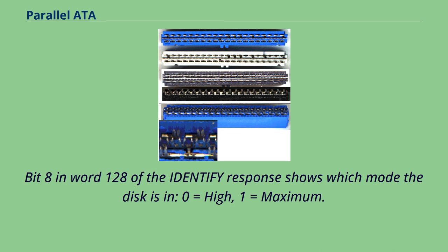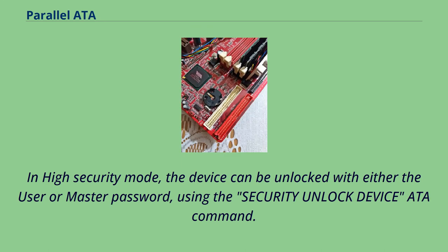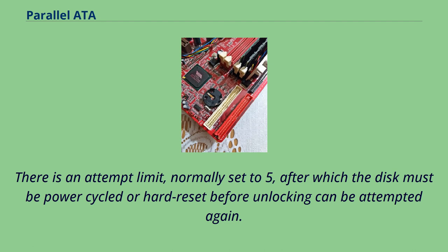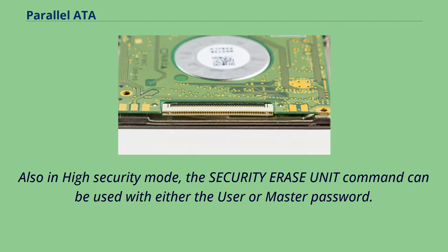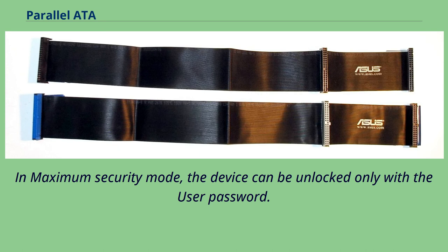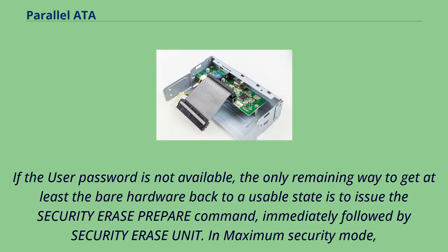In high security mode, the device can be unlocked with either the user or master password using the SECURITY UNLOCK DEVICE ATA command. There is an attempt limit, normally set to 5, after which the disk must be power cycled or hard reset before unlocking can be attempted again. Also in high security mode, the SECURITY ERASE UNIT command can be used with either the user or master password. In maximum security mode, the device can be unlocked only with the user password. If the user password is not available, the only remaining way to get the bare hardware back to a usable state is to issue the SECURITY ERASE PREPARE command immediately followed by a SECURITY ERASE UNIT. In maximum security mode, the SECURITY ERASE UNIT command requires the master password and will completely erase all data on the disk.